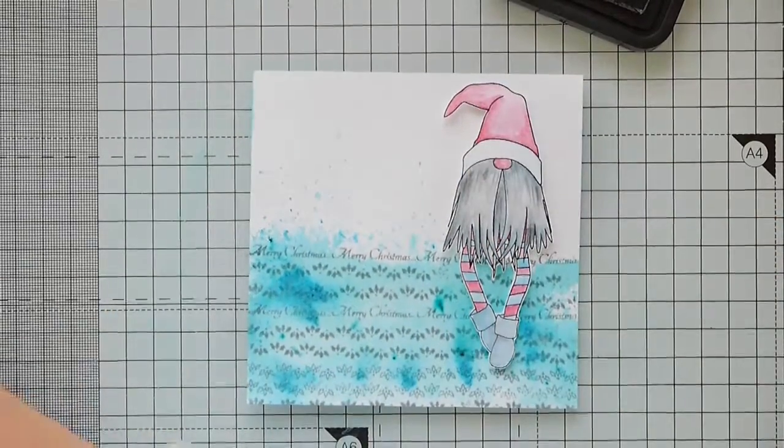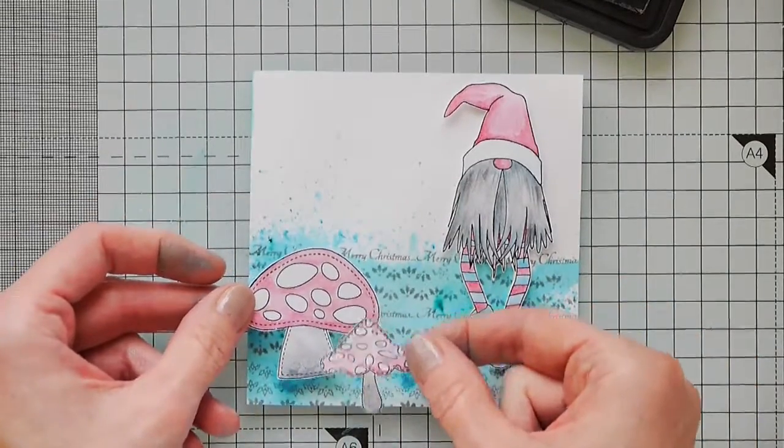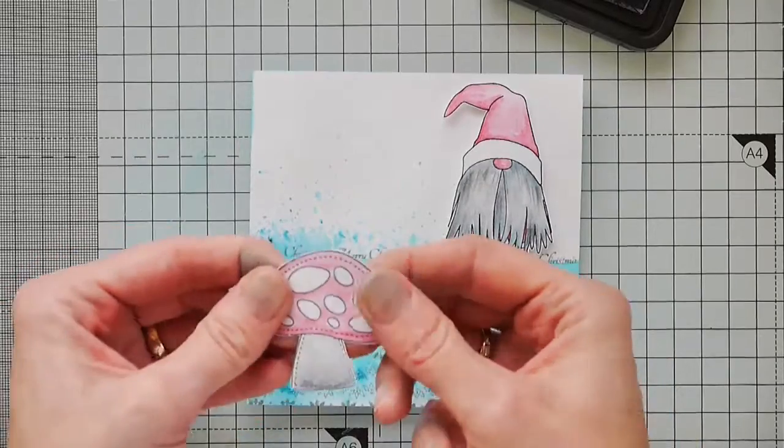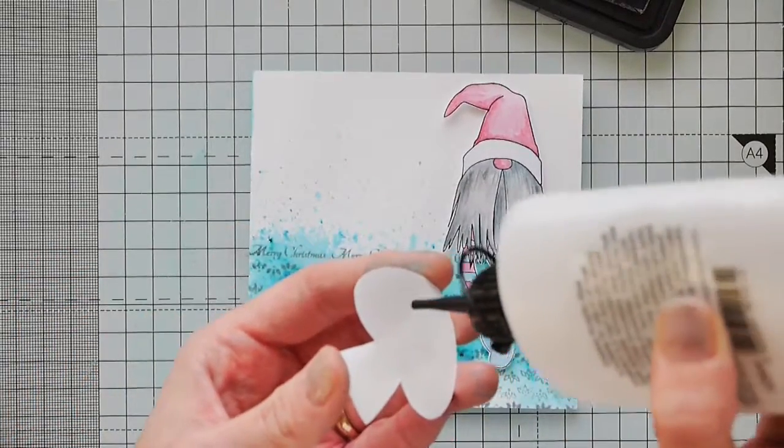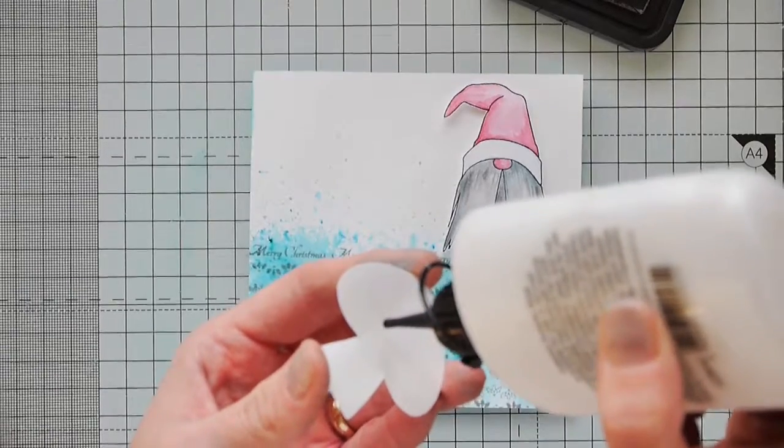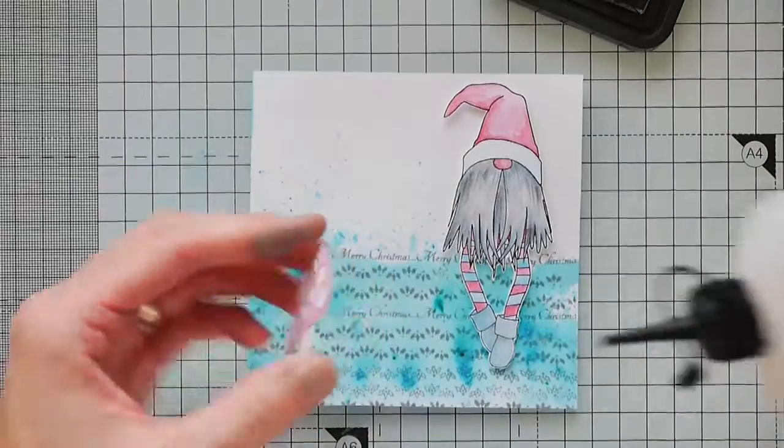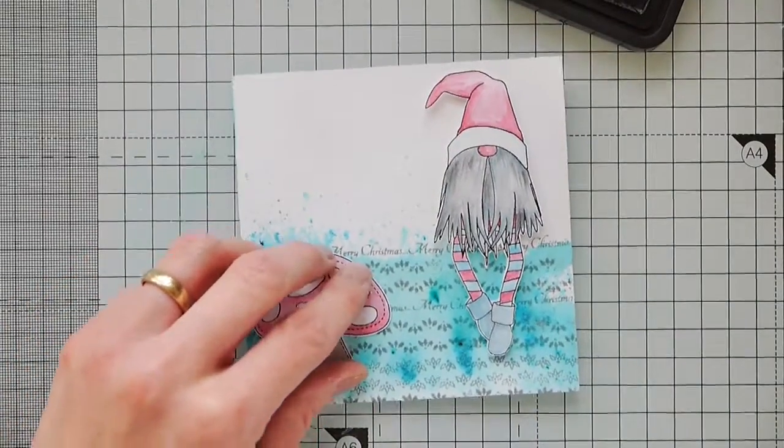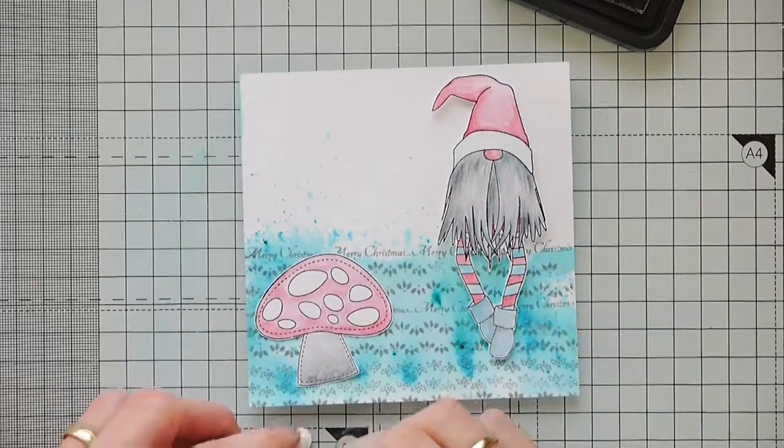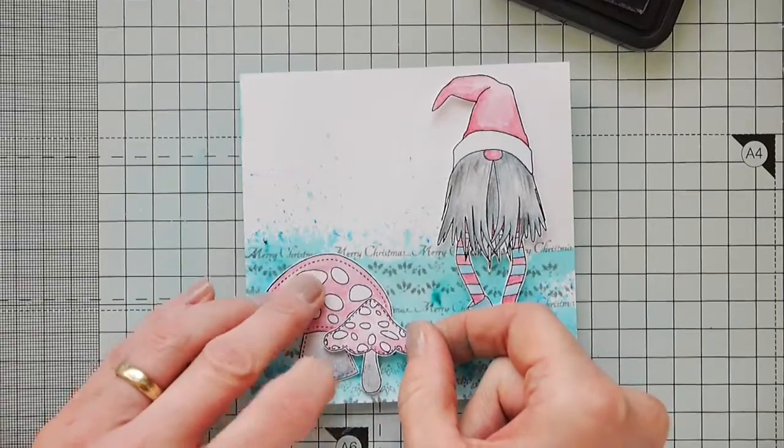Now I've stamped a couple of the toadstools as well. I think they're just lovely. This larger one I'm just going to glue flat. And put that there. And then this little toadstool, I've already got the foam pads on, and I'll just sit that over the top.